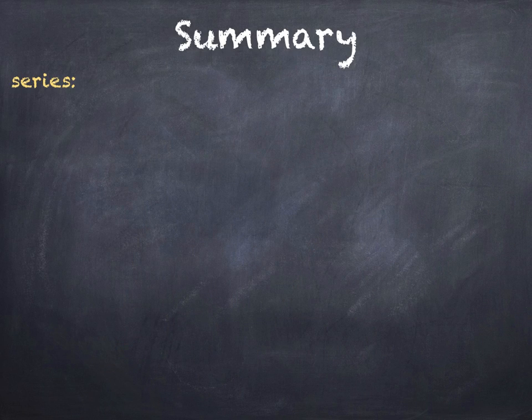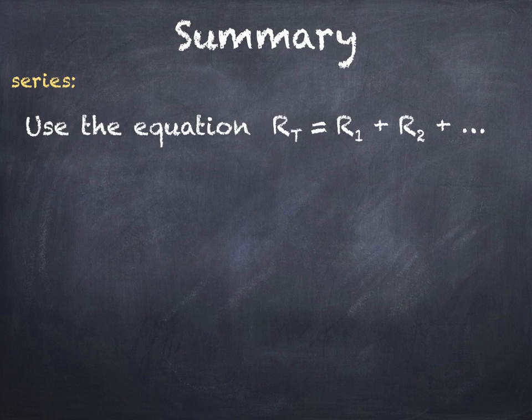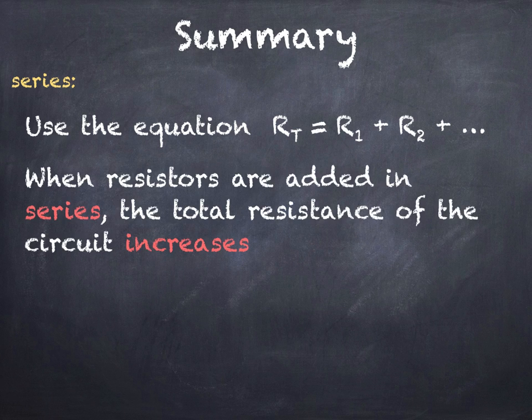When resistors are arranged in series the total resistance is found by using the equation RT equals R1 plus R2 plus however many resistors you have. Also when we add resistors in series the total resistance of the circuit increases and of course this will affect the current in the circuit as I mentioned in another video.